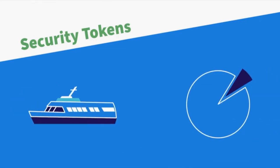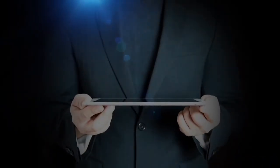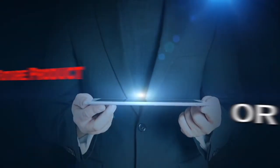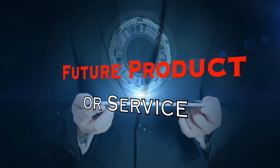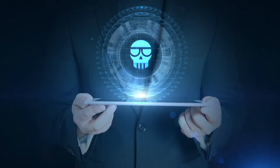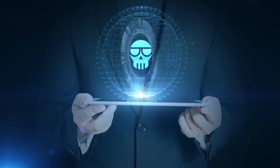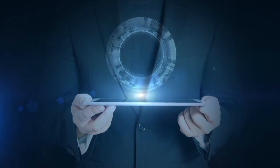For example, a person could own a token that represents a five percent share of a boat. Utility tokens give users access to a future product or service. For example, a startup issues utility tokens to users to raise money, and later users utilize the tokens to use the startup service.